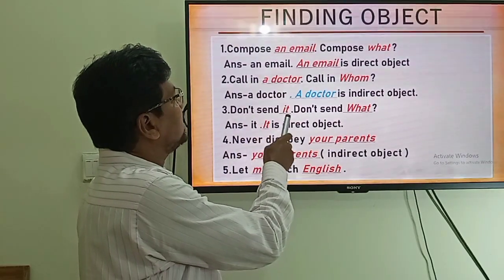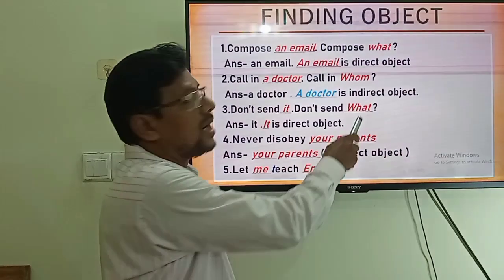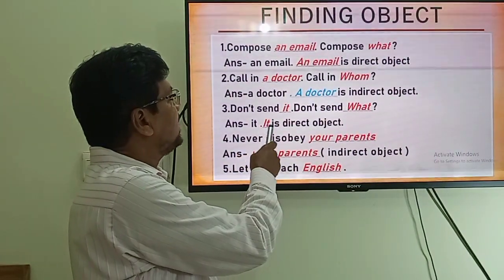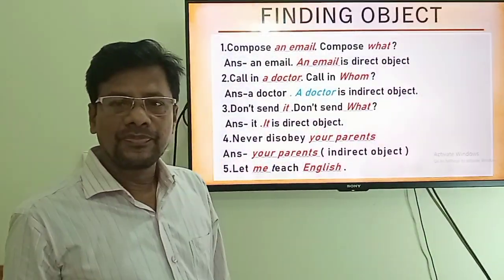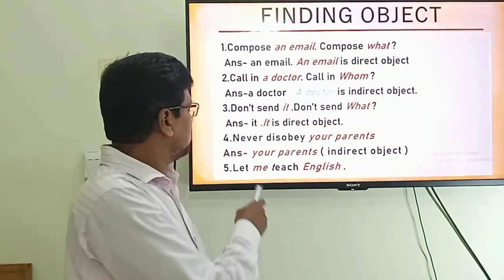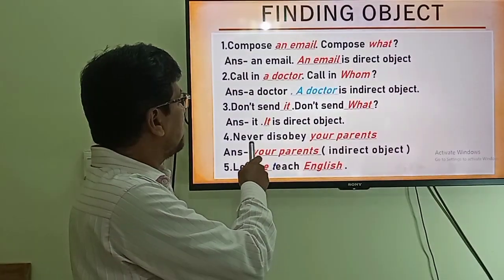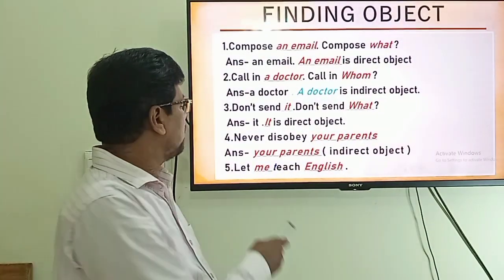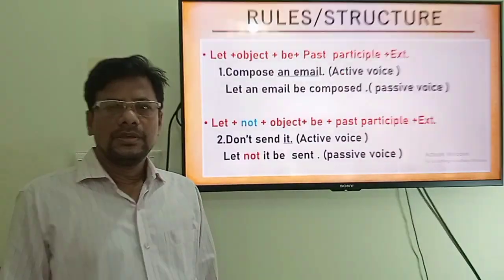Number three: 'Don't send it' — don't send what? The answer is 'it'. 'It' is a direct object. Number four: 'Never disobey your parents' — never disobey whom? The answer is 'your parents'. It is an indirect object.